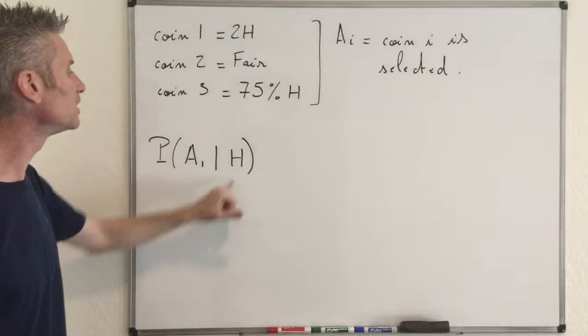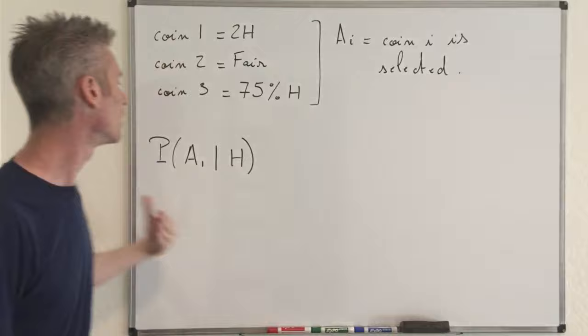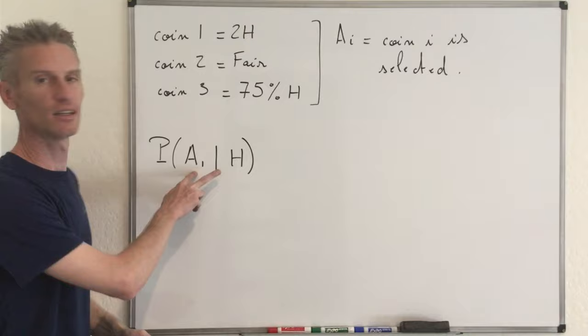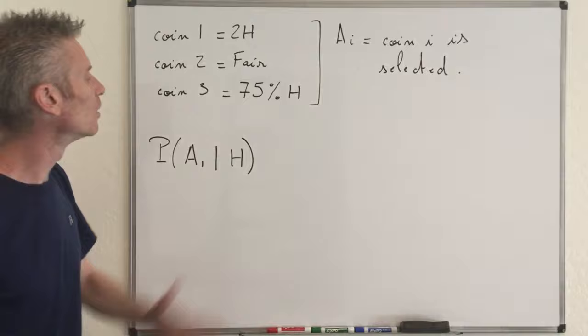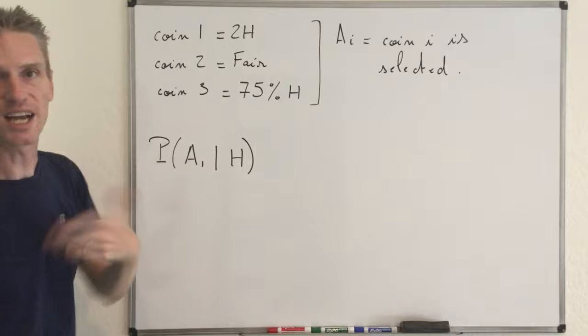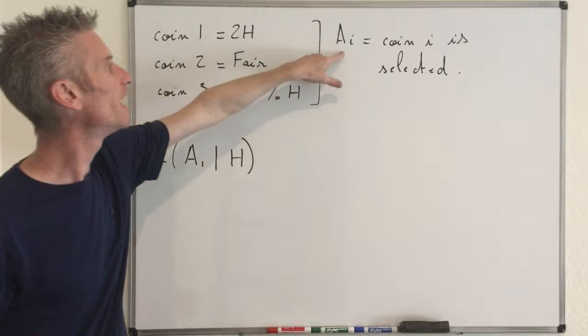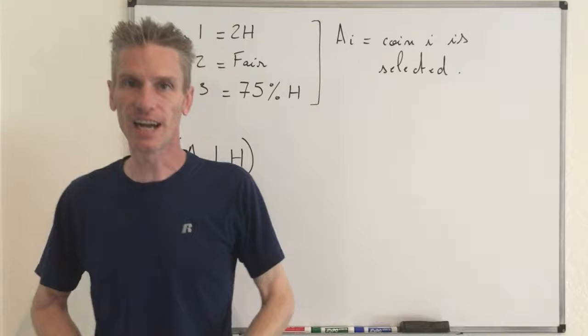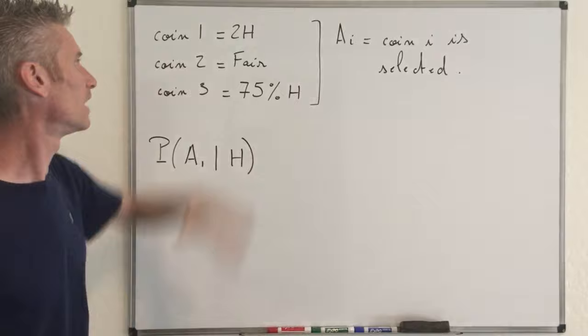We want to compute the probability of something happening at the first step — that's event A1 — given that we see heads at the second step. The direction of time here is reversed. But clearly, the probability of getting heads given that you chose the two-headed coin is just equal to one. To compute P(H), you need to know which of the three outcomes occurred. So in general, P(H | A1), P(H | A2), P(H | A3) — those three conditional probabilities are easy to compute.